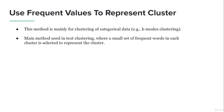We can also use the most frequent value in a given cluster as its representative information. This method is used for categorical data, where we use the most frequent category — also known as the mode of the cluster — to represent it. Basically, this method is used in text clustering where a small set of frequent words in each cluster is selected to represent the cluster. We can pick the most frequent word to represent the text.